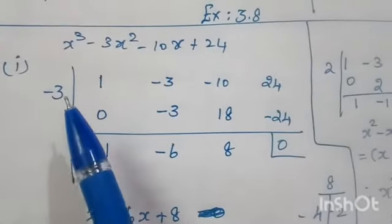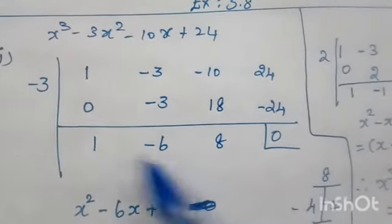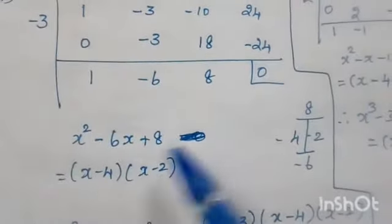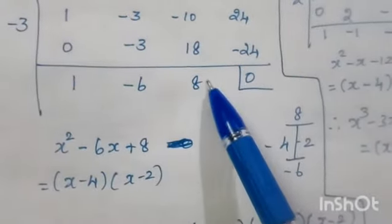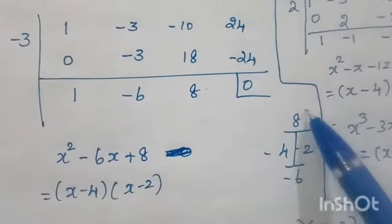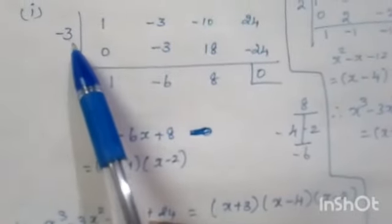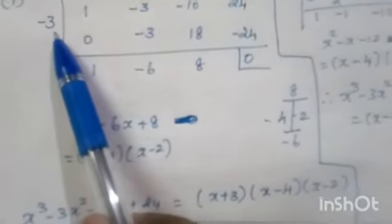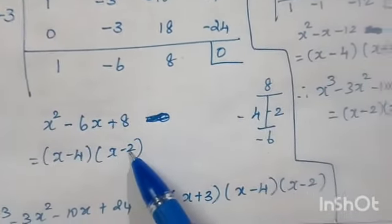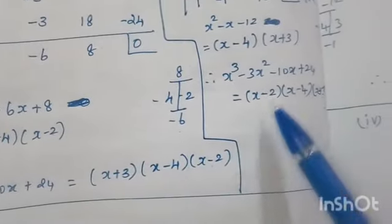The same problem can also be solved using minus 3. If you select minus 3 as the trial value, you get the quotient x² minus 6x plus 8, where the product value is 8 and adding value is minus 6, giving factors x minus 4 and x minus 2. So the final factors using minus 3 are x plus 3, x minus 4, and x minus 2 — the same three factors in different order.